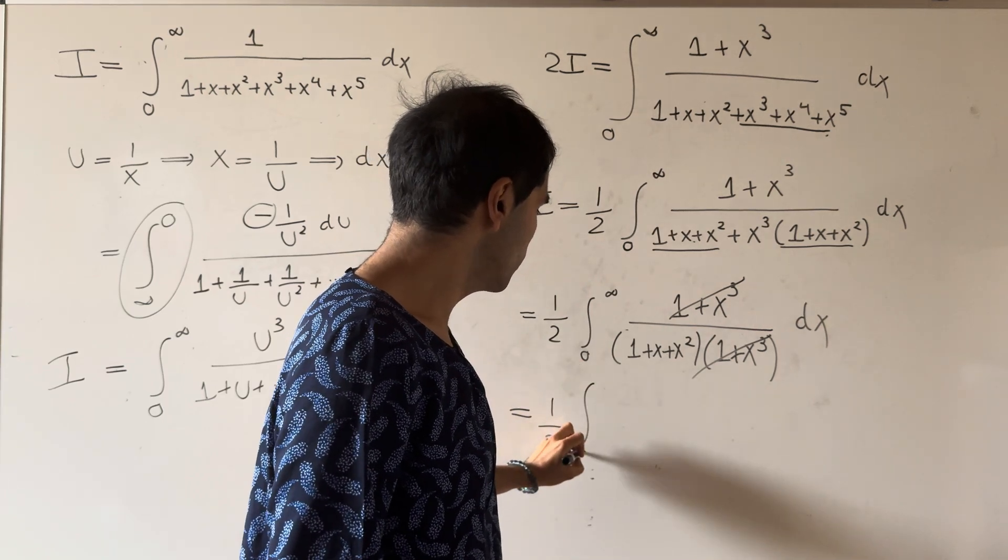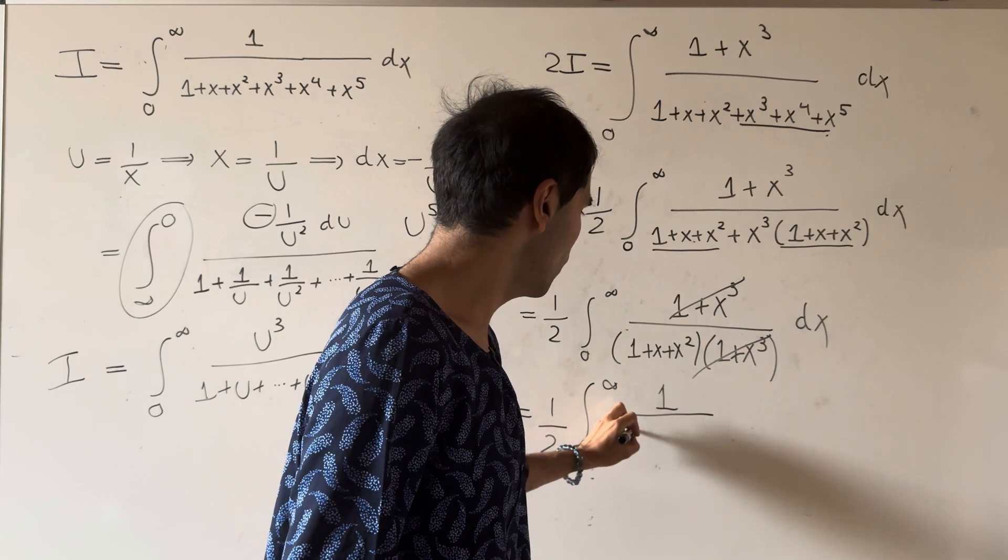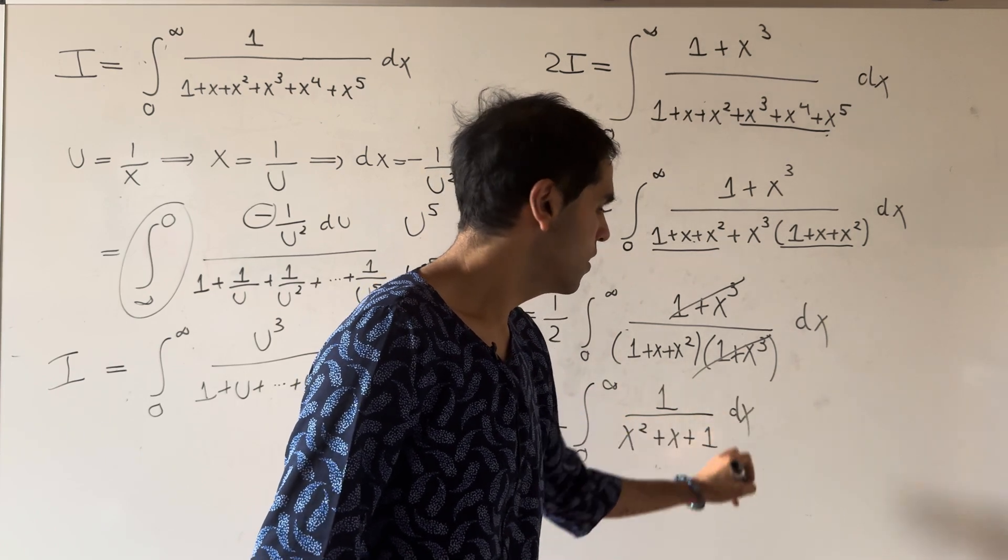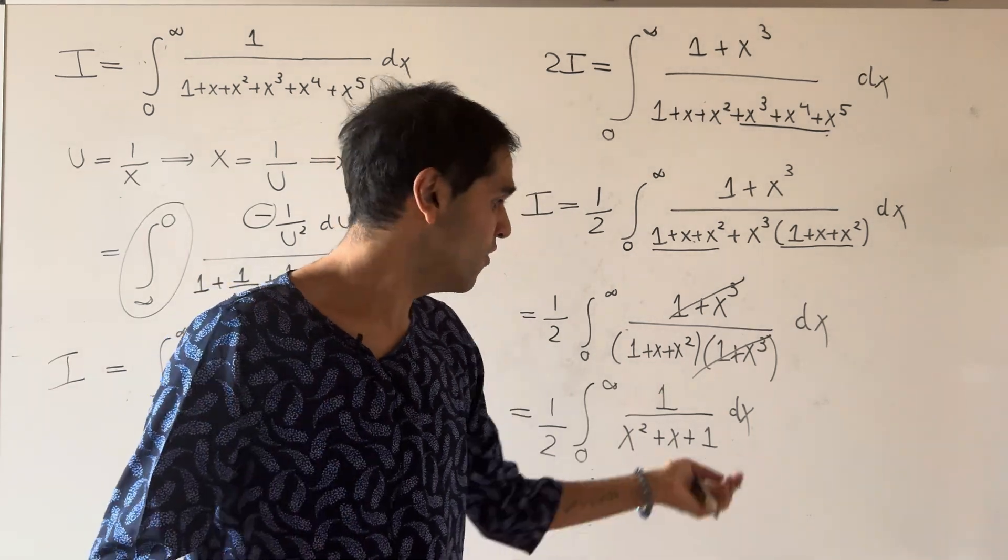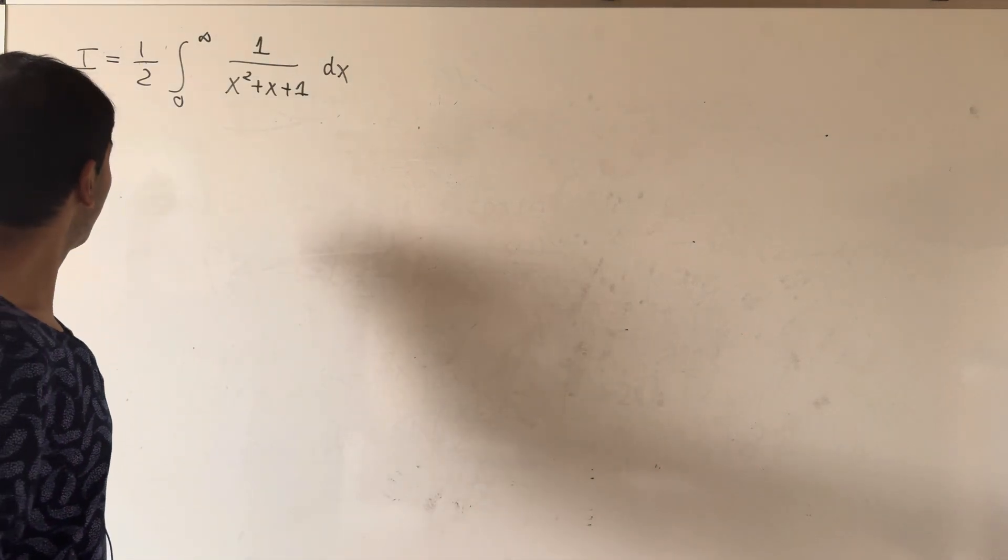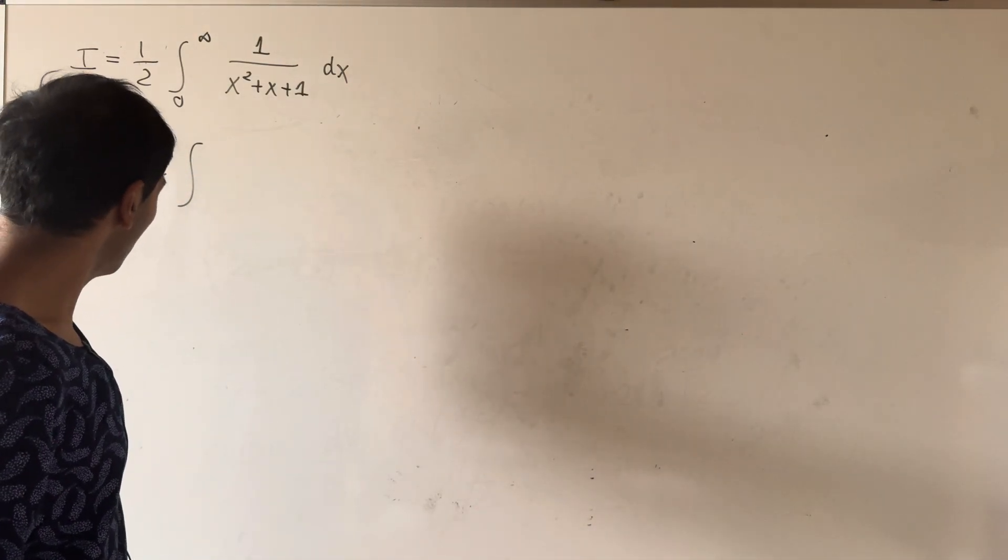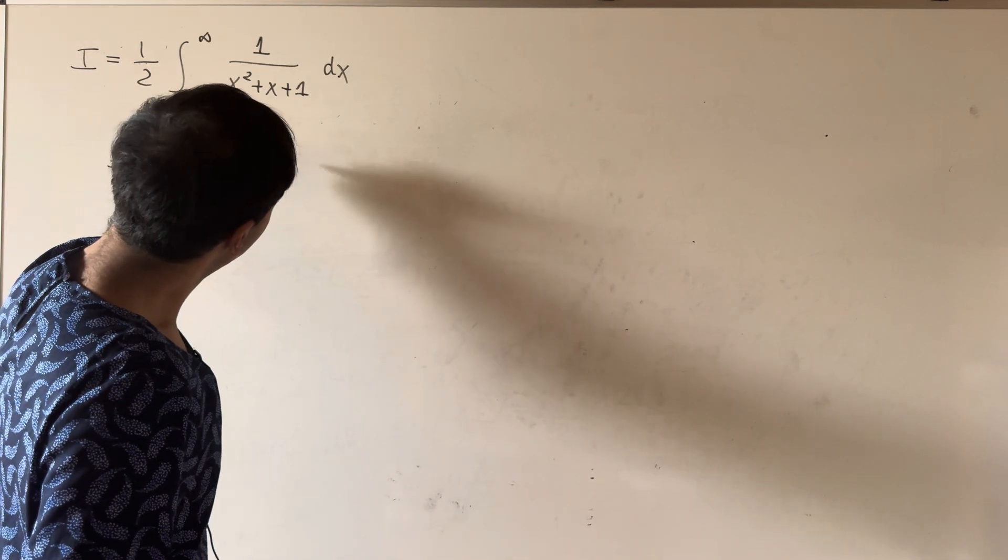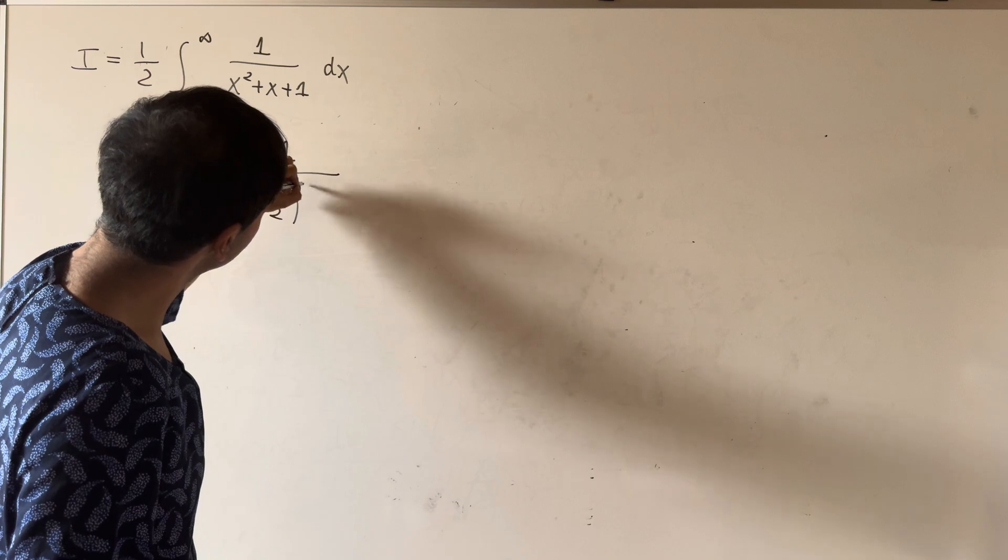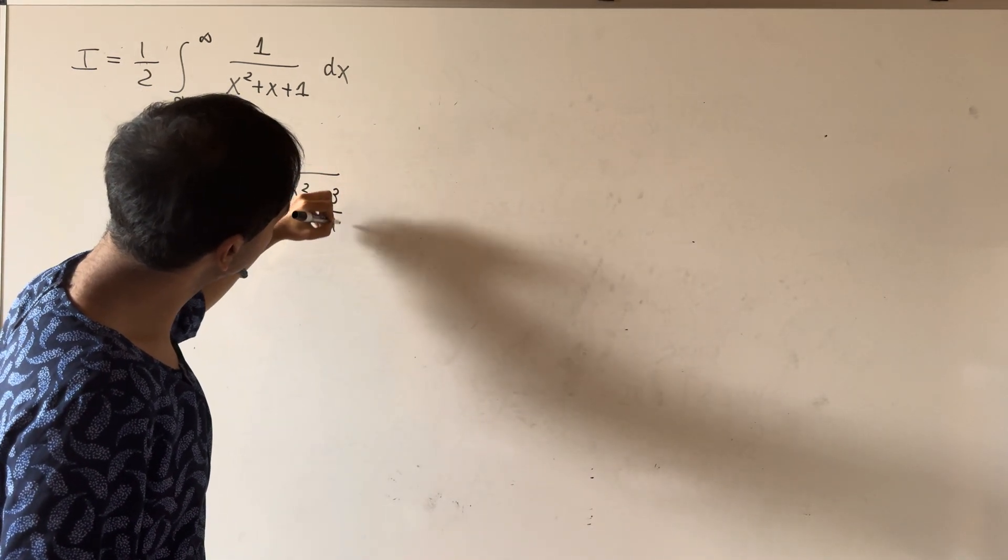And then in the end, what you get is that your integral is just equal to the integral of 1 over x squared plus x plus 1 dx, which now we can just evaluate by completing the square. Okay, so how do we do this? This is 1 half integral from 0 to infinity of 1 over x plus 1 half squared, and then minus 1 quarter plus 1, so plus 3 quarters dx.